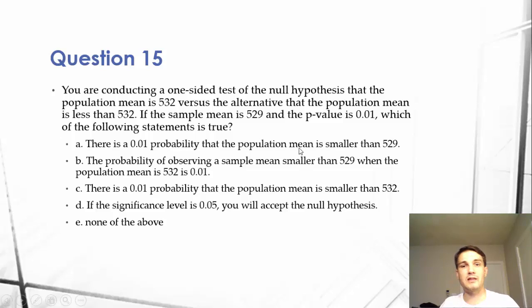There is a 1% probability that the population mean is smaller than 529. And we're getting closer, but we're not talking about the population. We're talking about the sample, and then we're making assumptions and inferences off of the sample to the population. So A is not correct.